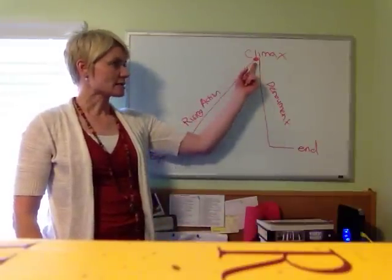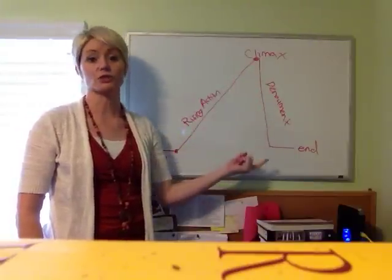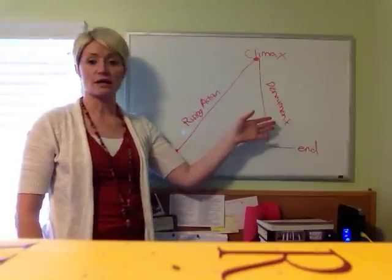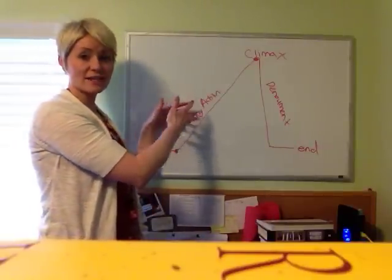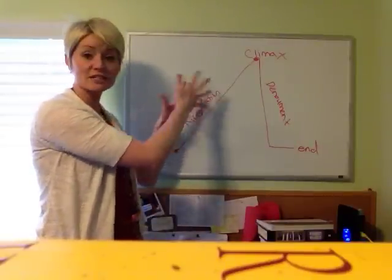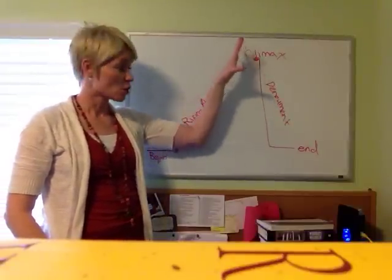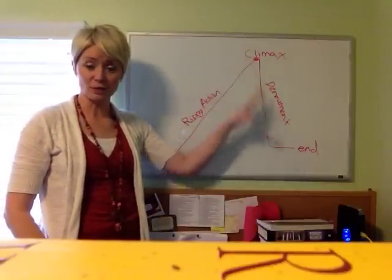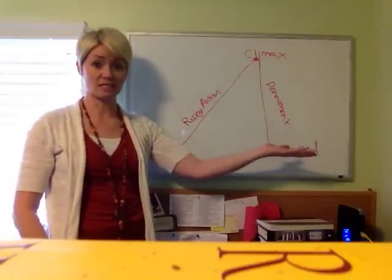After your climax, you're going to come into what is called the denouement, or the resolution. What happens in the denouement is all of these threads, story threads, and conflicts that are going on during your try-fail cycles that lead up to the climax will all be resolved in this denouement portion of your story. And then it's the end of your story.